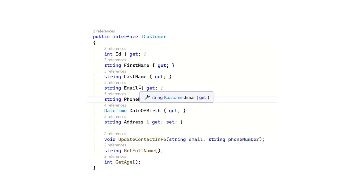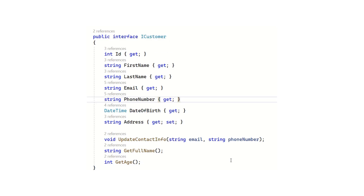Look at this simple example of an interface. Here you can see that we have defined a few properties and this interface iCustomer has three methods. If you notice, we have not provided any implementation details for updateContactInfo, getFullName, or getAge. This is just describing what iCustomer will have and what methods it will have, but the implementation details are not provided. So you can see that this is a way of achieving abstraction.